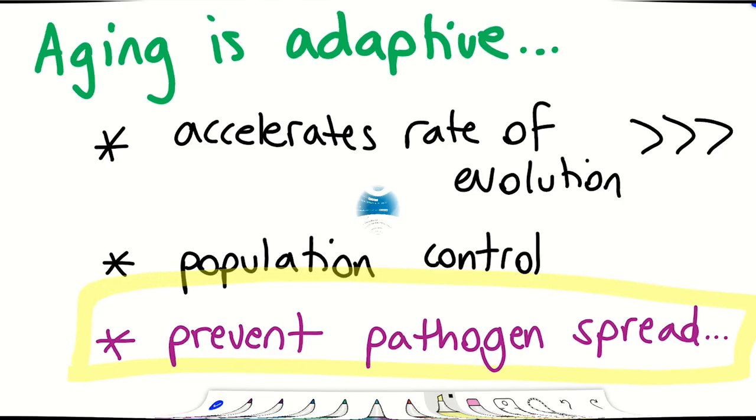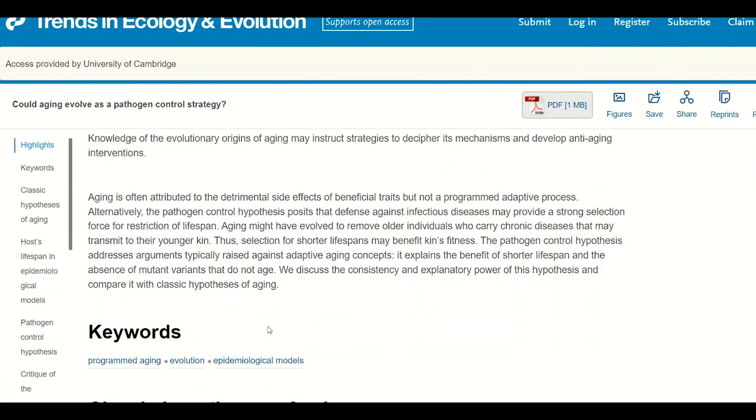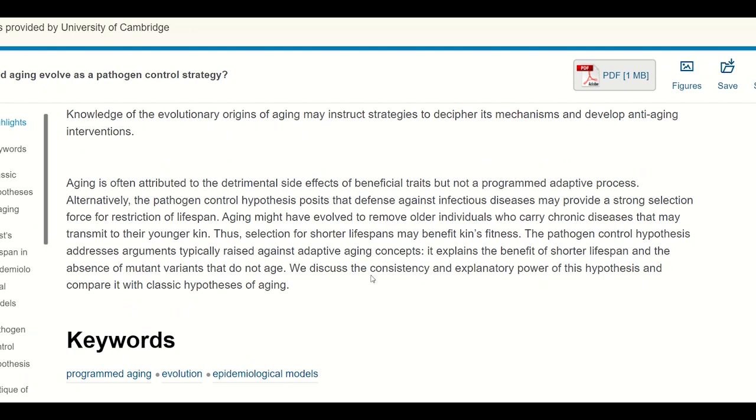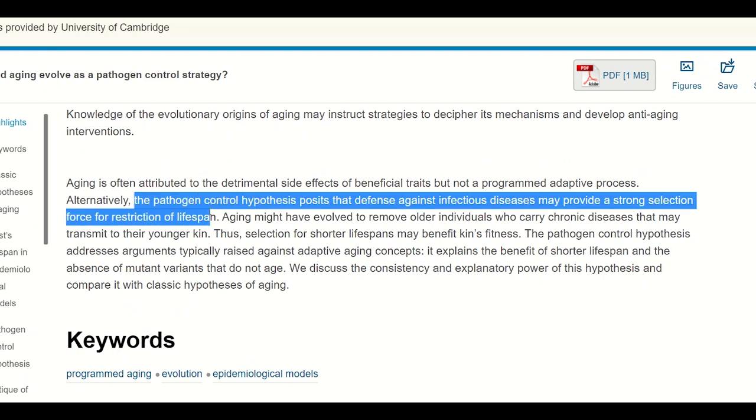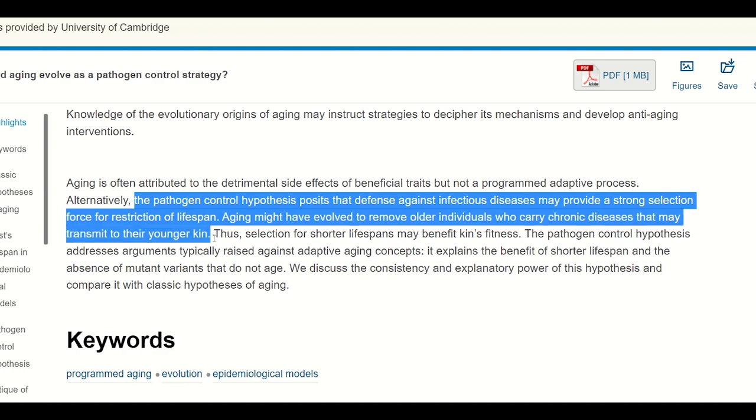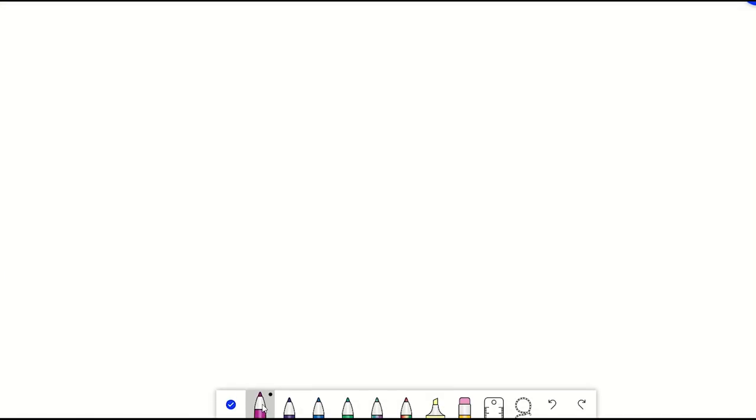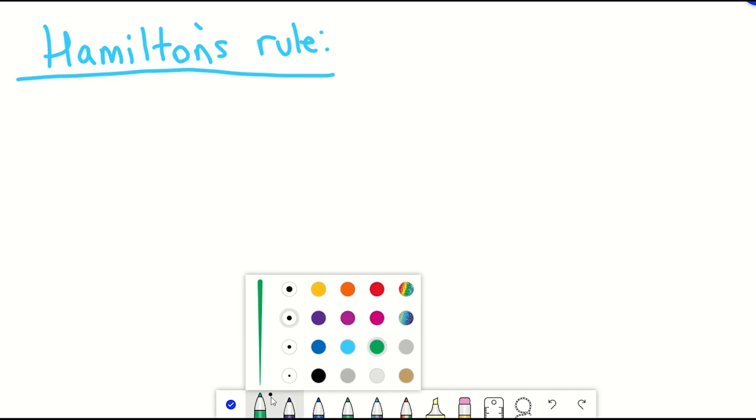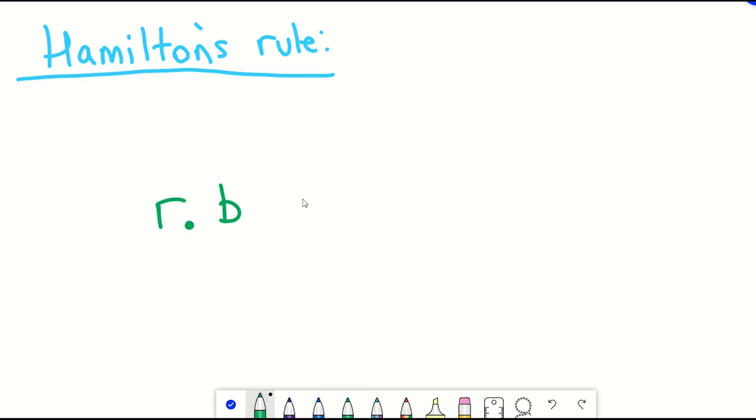So this brings us back to the pathogen control strategy. And in essence, this theory proposes that aging evolved to prevent the spread of infectious agents to younger kin. So let's explain a bit more. So one concept you need to grasp is Hamilton's rule. Hamilton's rule can be used to explain altruistic behavior. So here, aging having a fitness cost to the person who's aging. But the idea is that the benefit is that this is preventing the spread of disease to kin.